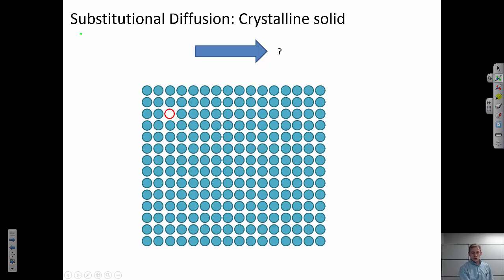What about substitutional diffusion? And that's when an atom is sitting on a site that is usually occupied by some other atom. So if I'm looking at this lattice, there's nowhere for this atom to go. It's not going to hop into an interstitial site. And all of the neighboring substitutional sites are occupied. So how do I get the atom to move at all? And the answer is vacancies.